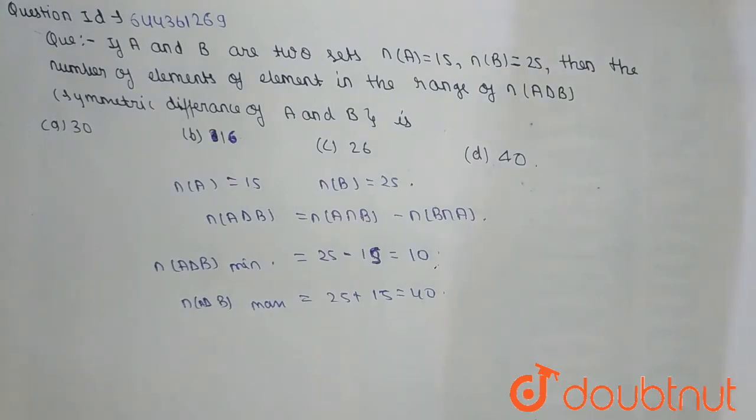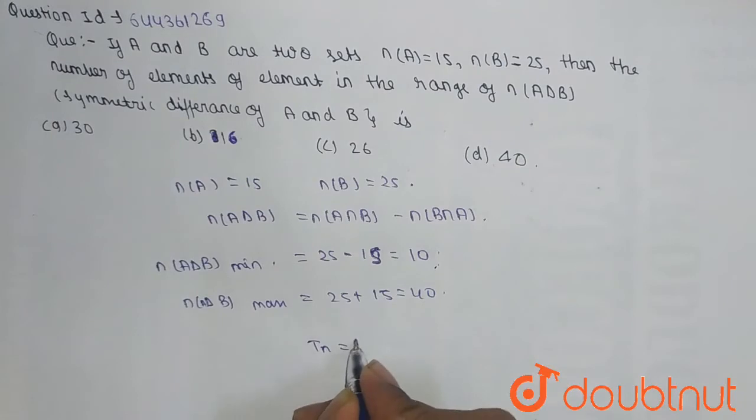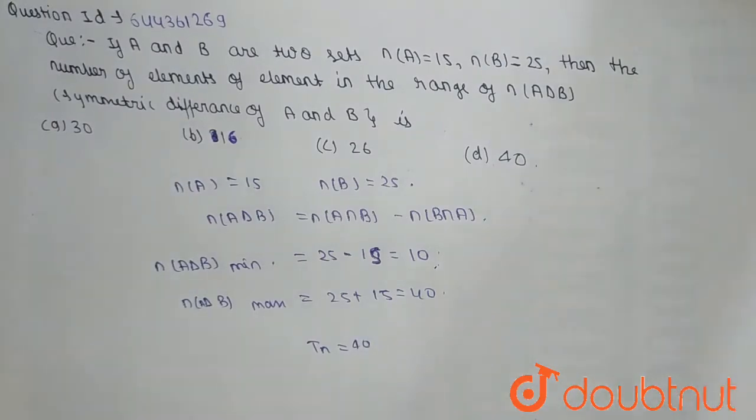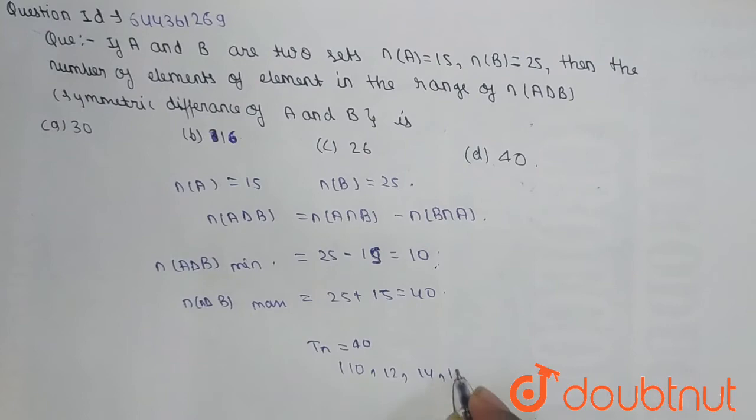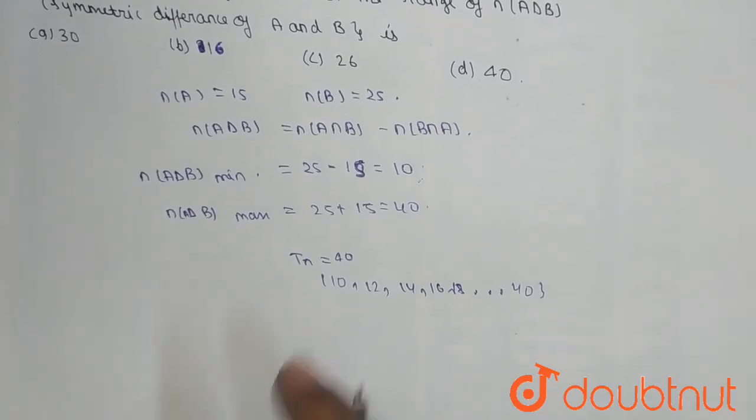Now what we have to do: we have given tn is equal to 40, and the series will be formed like 10, 12, 14, 16, 18, and this will be up to 40.